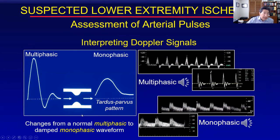As far as interpreting Doppler signals go, this is the way we represent graphically a normal multiphasic — in this case triphasic — arterial Doppler signal with a large systolic forward flow phase, a short phase of flow reversal in late systole and early diastole, and then a final small forward phase in late diastole.